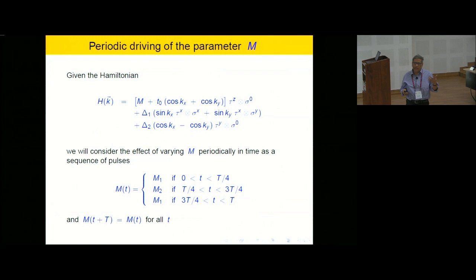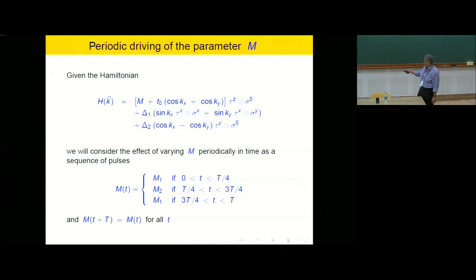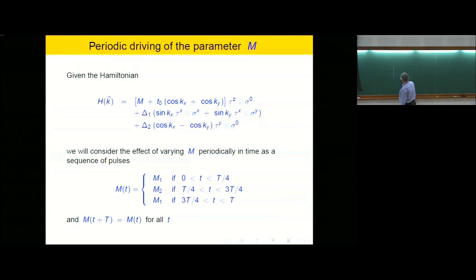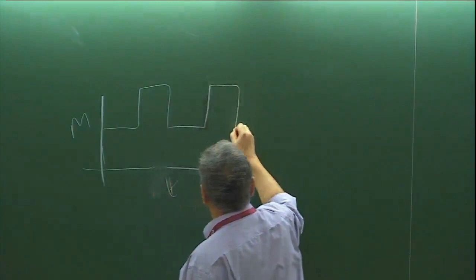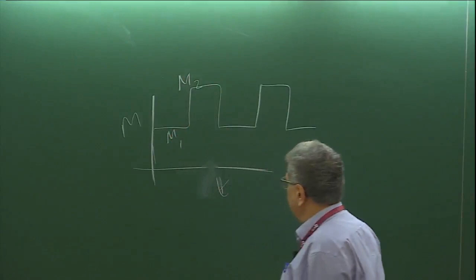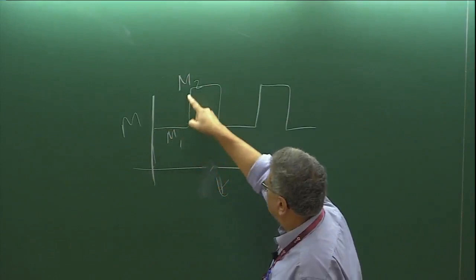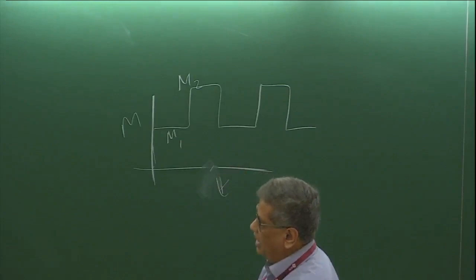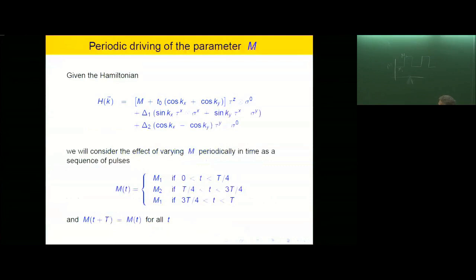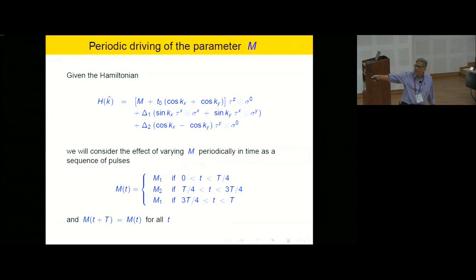Now I'm going to tell you about what we did with periodic driving. The simplest thing we thought of driving is M — the orbital parameter which has different values for the two orbitals, plus one and minus one. We studied what happens when you drive M periodically in time as a sequence of two pulses. Here's M as a function of time: one pulse is M1 and the other is M2. We have it as M1 for the first one-quarter of a time period, then M2 for the next half time period, then M1 for the last one-quarter. This is really the same as having M1 for half a period then M2 for the other half, under a time shift, but this particular ordering has a little more symmetry which helps us.